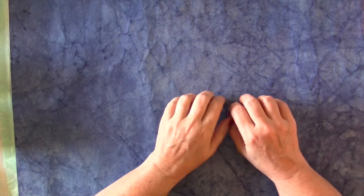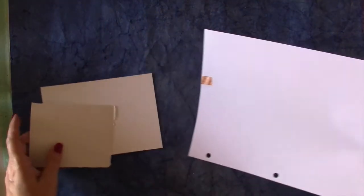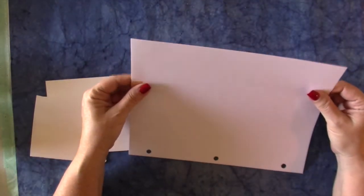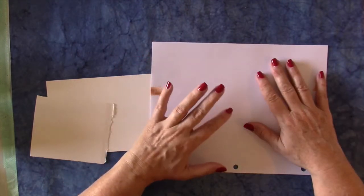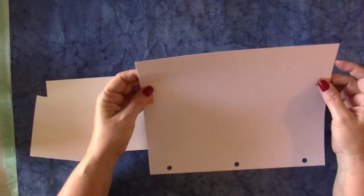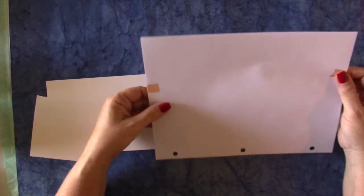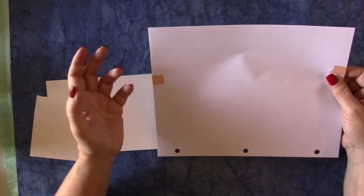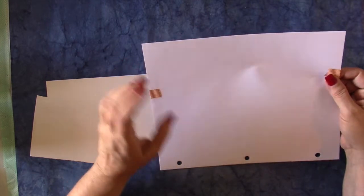The next two things I wanted to talk about that are really important are the weight and the finish of the paper. I have some examples to show you. The most common and most easily accessible weights of paper are 90 pound, 140 pound, or 300 pound.